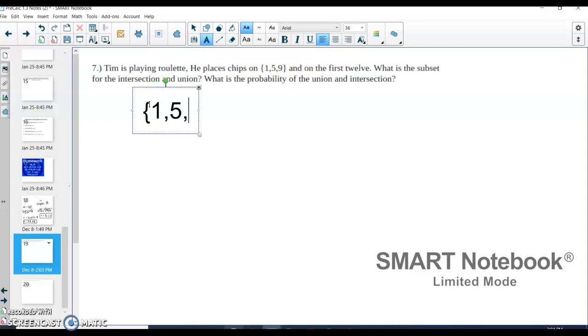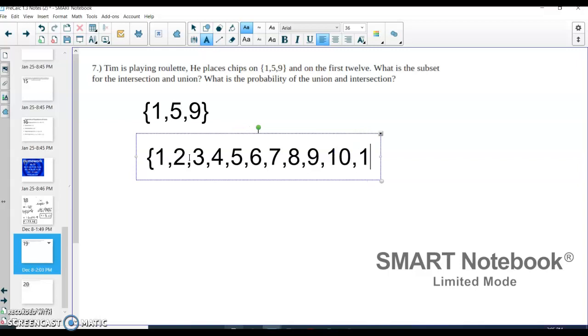The first set is 1, 5, and 9. And we have the set of the first 12 numbers, which is 1, 2, 3, 4, 5, 6, 7, 8, 9, 10, 11, and 12. Those are our two subsets that we're going to work with.